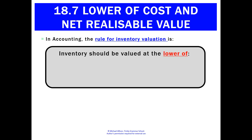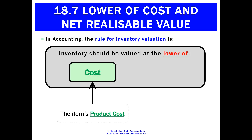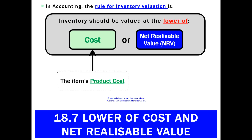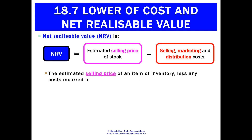So how should we value inventory then? Should we pick the amount we paid — the cost — or today's value? The rule we're going to apply is: pick whichever is the lowest. Inventory will always be valued at whichever is lower out of the cost — the product cost — or what's called the net realisable value.